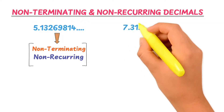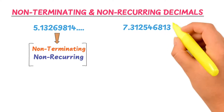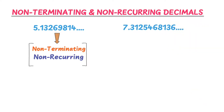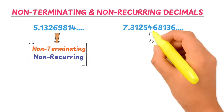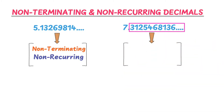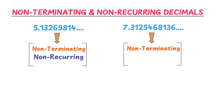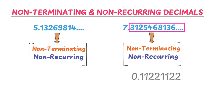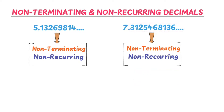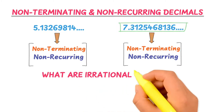Another example is 7.3125468136 and so on. Here again the digits in the decimal part never end. Secondly, they are not recurring, like 0.1122112 and so on. So this number is also an example of a non-terminating and non-recurring decimal.